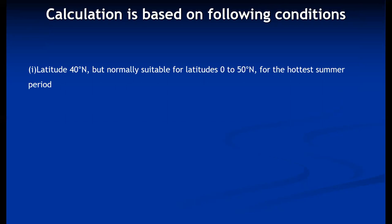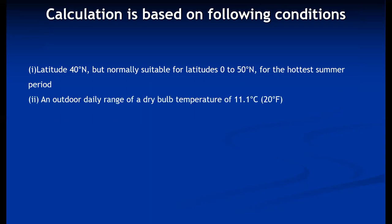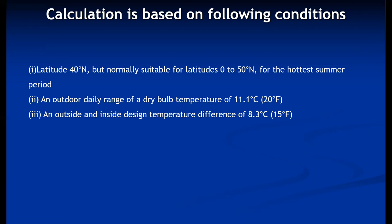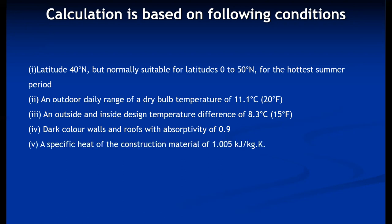The standard conditions used for calculating CLTD table values are: latitude of 40° N, suitable for latitudes 0° to 50° N; hottest summer period; an outdoor daily range of dry bulb temperature of 11.1°C; an outside and inside design temperature difference of 8.3°C; dark-colored walls and roofs with absorptivity of 0.9; and a specific heat of construction material of 1.005 kJ/kg·K.